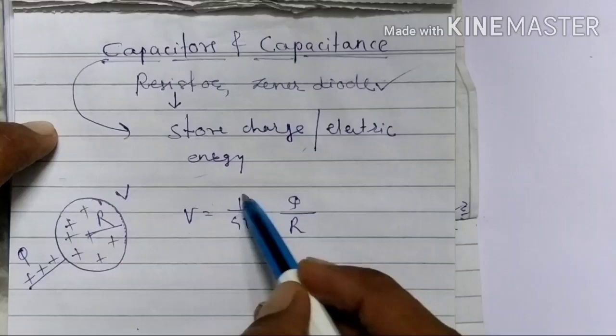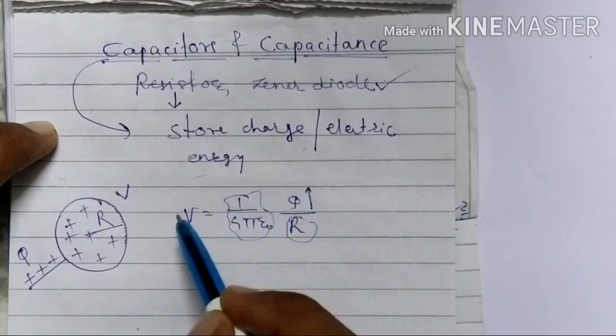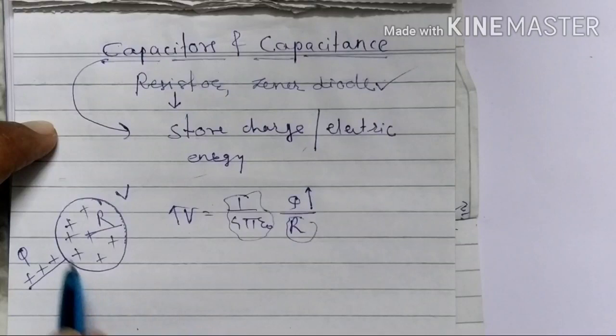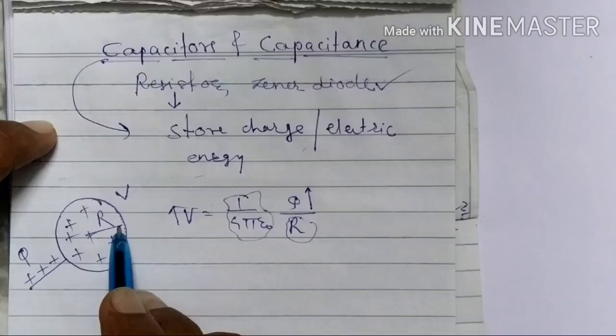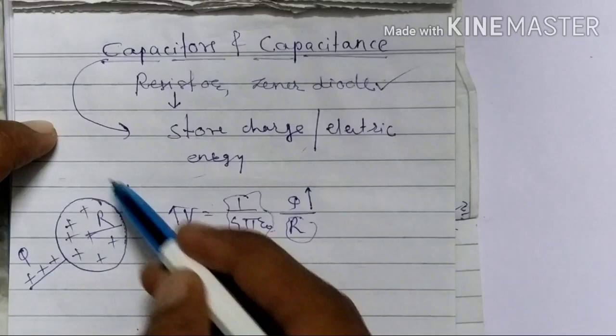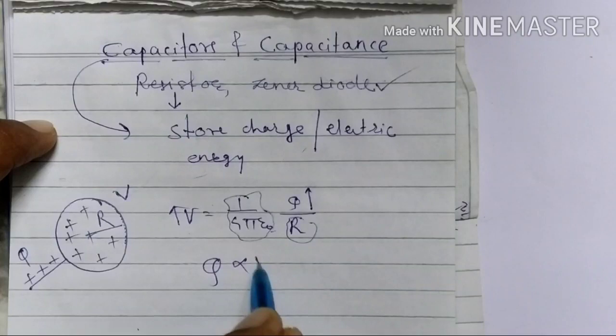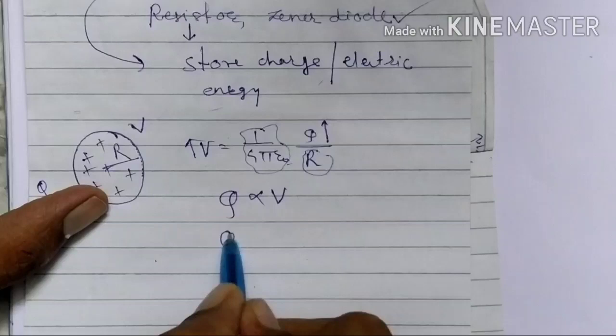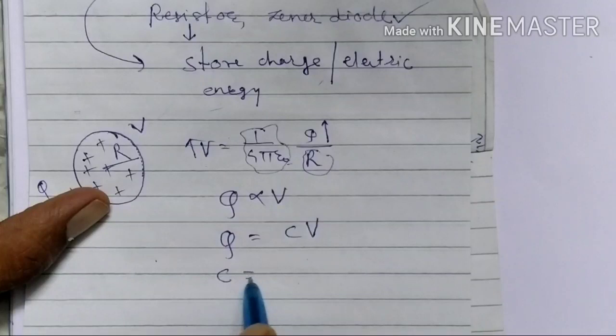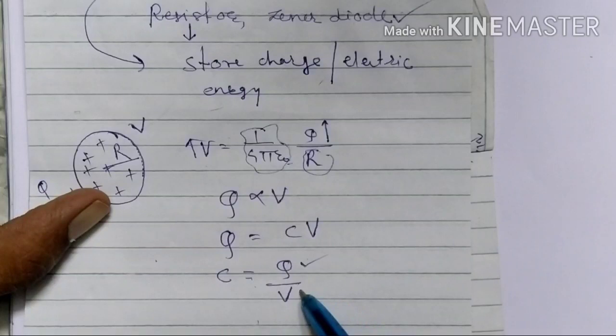Here 1 over 4π ε₀ is constant and radius R is constant. So if we continuously provide charge, its potential keeps increasing. So we can write Q is directly proportional to V. Changing the proportionality sign, we get Q is equal to C times V, therefore C is equal to Q divided by V. Here Q is charge, V is potential, and C is capacitance.